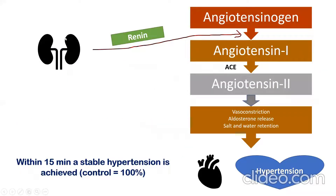So what is this system? The kidney releases renin and this renin converts angiotensinogen to angiotensin 1, and angiotensin 1 to angiotensin 2 in the presence of angiotensin converting enzymes. As a result, this conversion leads to vasoconstriction, then aldosterone release, which is the antidiuretic hormone, and salt and water retention. And because of this, the blood pressure rises and it produces hypertension.